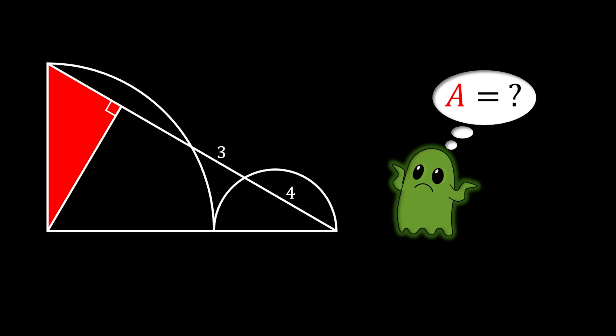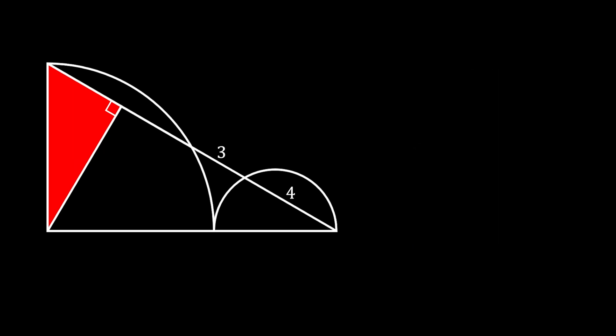Alright, so let's solve this one. First, let's mark the center of our quarter circle as O, and then let's mark all the intersection points of our line as A, B, C, and D.